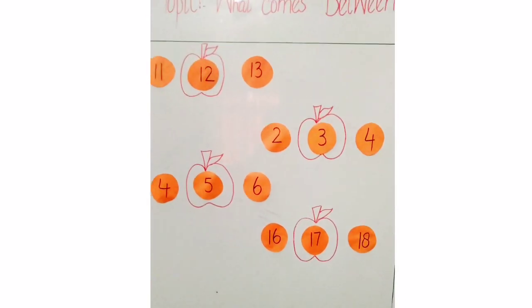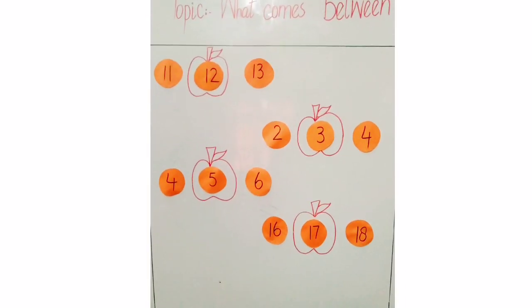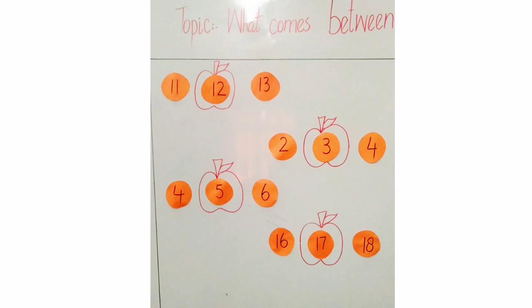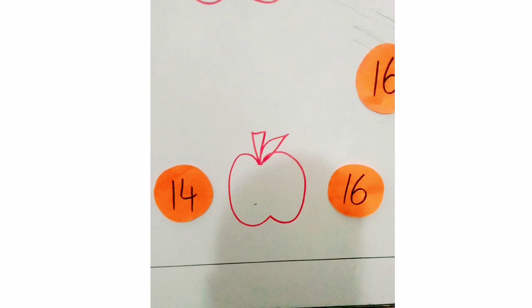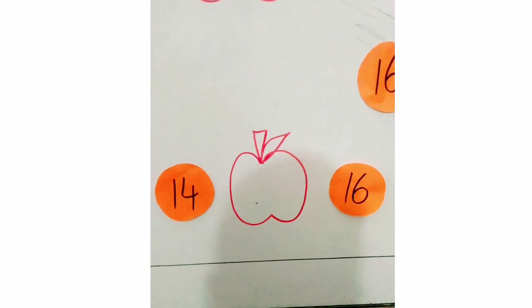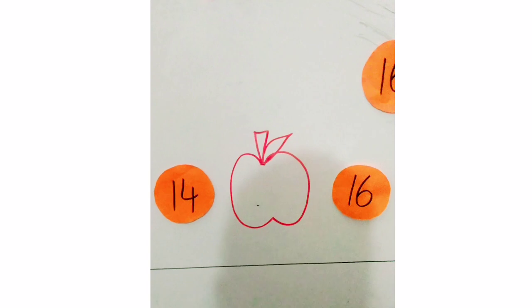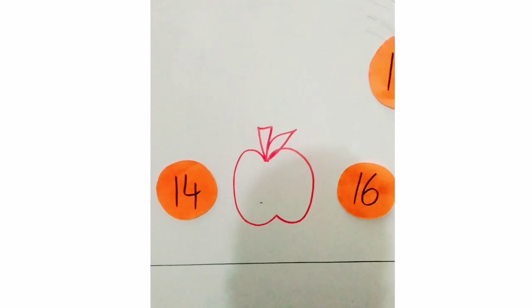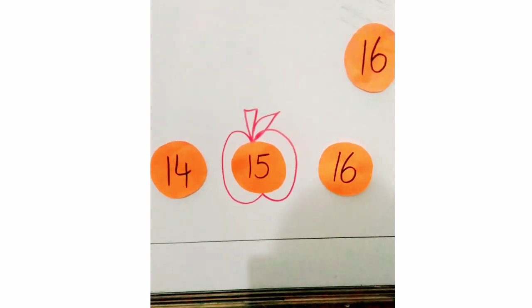Kids, we completed 4 tasks easily — you understand this concept! Okay kids, if you understand, let's finish our last task. What comes between 14 and 16? Number 15 comes between 14 and 16.